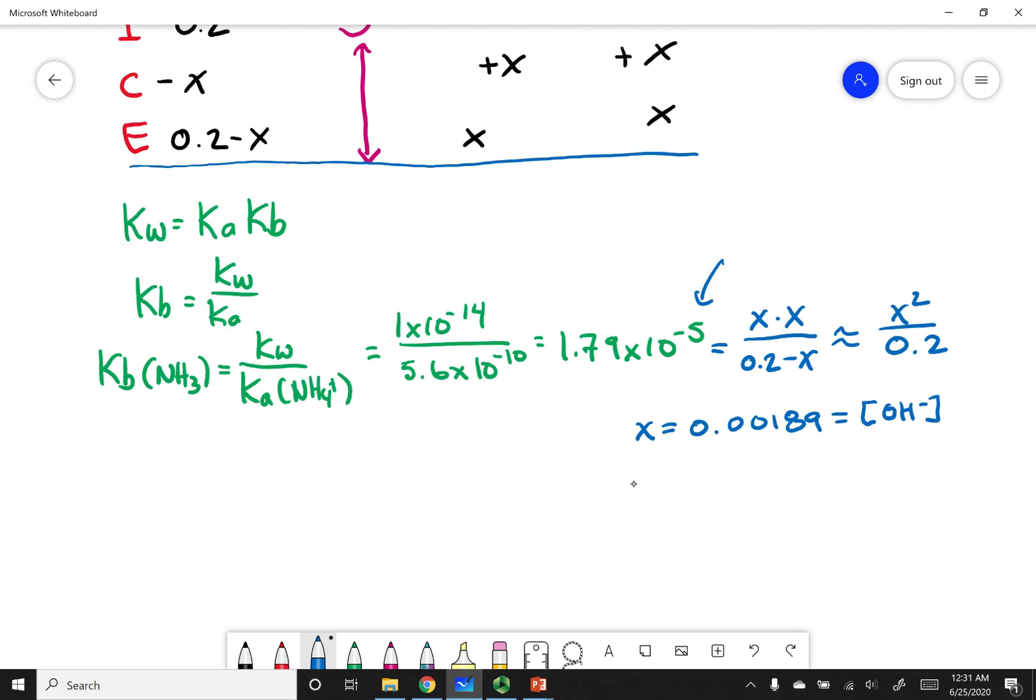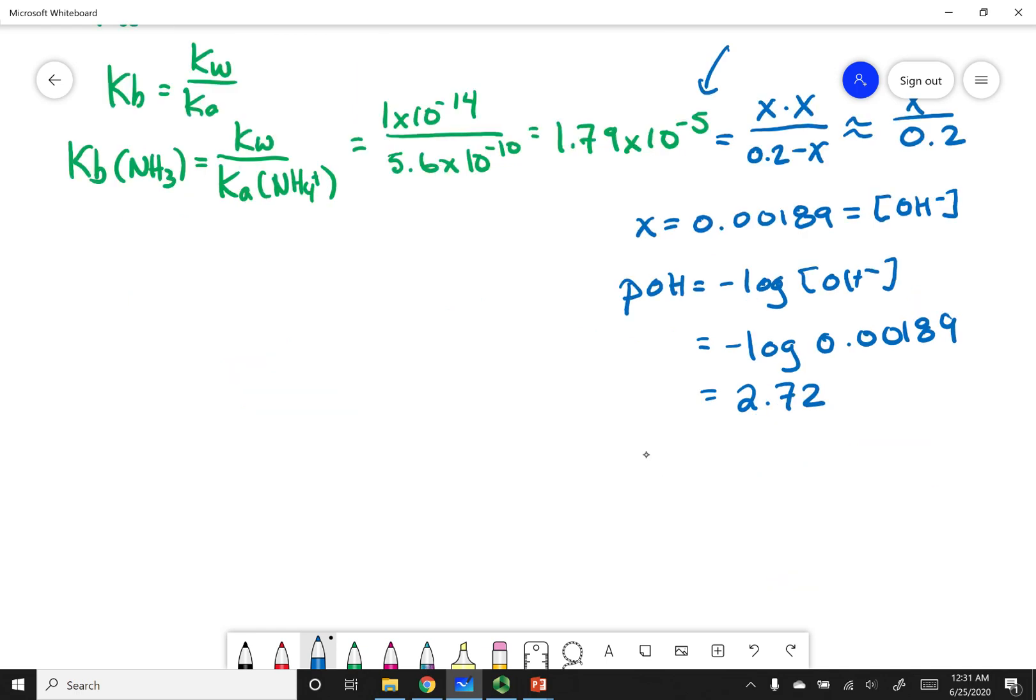So let's do the other part. The POH is going to equal the negative log of my OH minus concentration. And so that means I can take the negative log of 0.00189. And what I get out is I get a POH of 2.72. Now remember, I'm after pH. And remember pH equals 14 minus my POH. Or in this case, 14 minus 2.72. And so my pH for this problem is going to be 11.28.